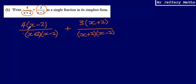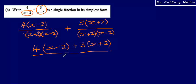Now that we've done this, we can write it over a single denominator. The denominator is now the same. So we can say that this is 4(x-2) + 3(x+2), all over the common denominator (x+2)(x-2).